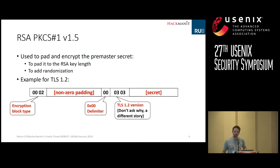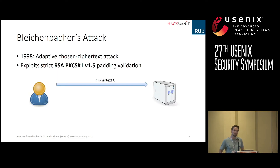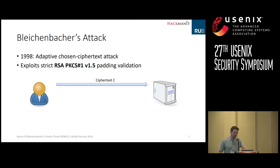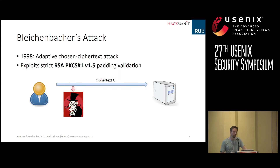This fixed structure of the RSA PKCS1.5 padding scheme was exploited in Bleichenbacher's attack. In 1998, 20 years ago, Daniel Bleichenbacher showed an adaptive chosen ciphertext attack. This attack exploits strict validation in RSA PKCS1.5 messages. On a high level, imagine a client communicating with a server and sending ciphertext, while an attacker observes the communication, eavesdrops the ciphertext, and somehow modifies it cryptographically.